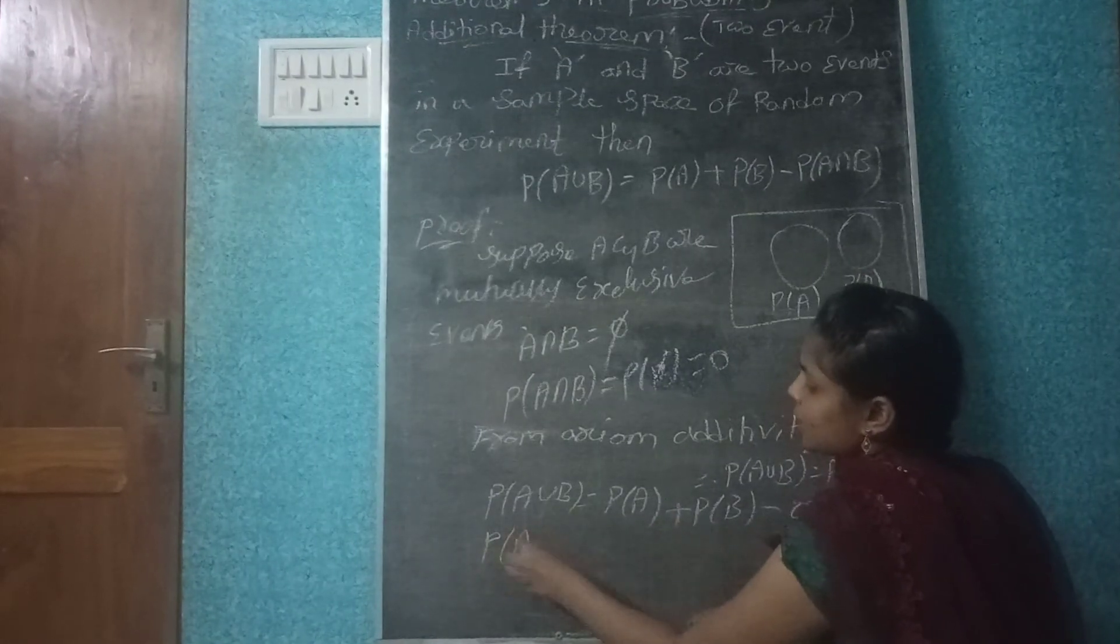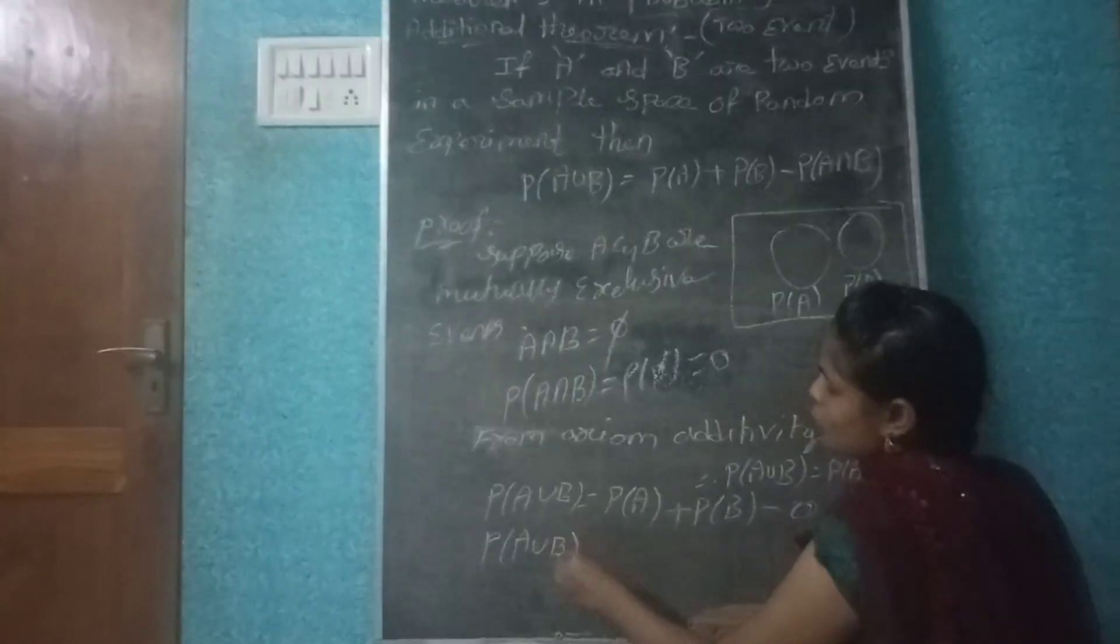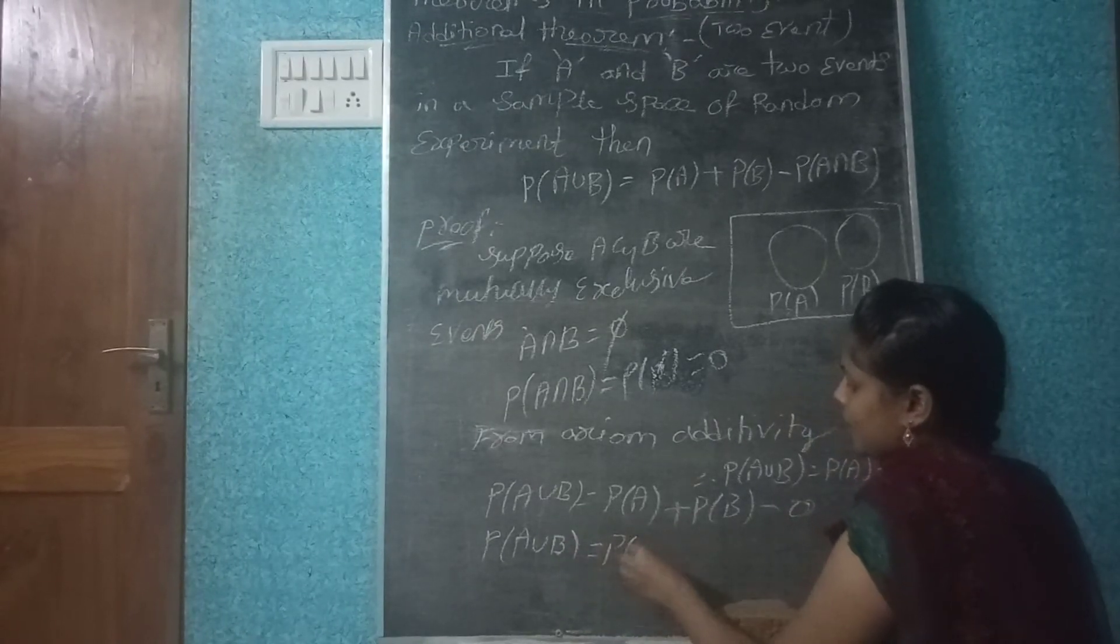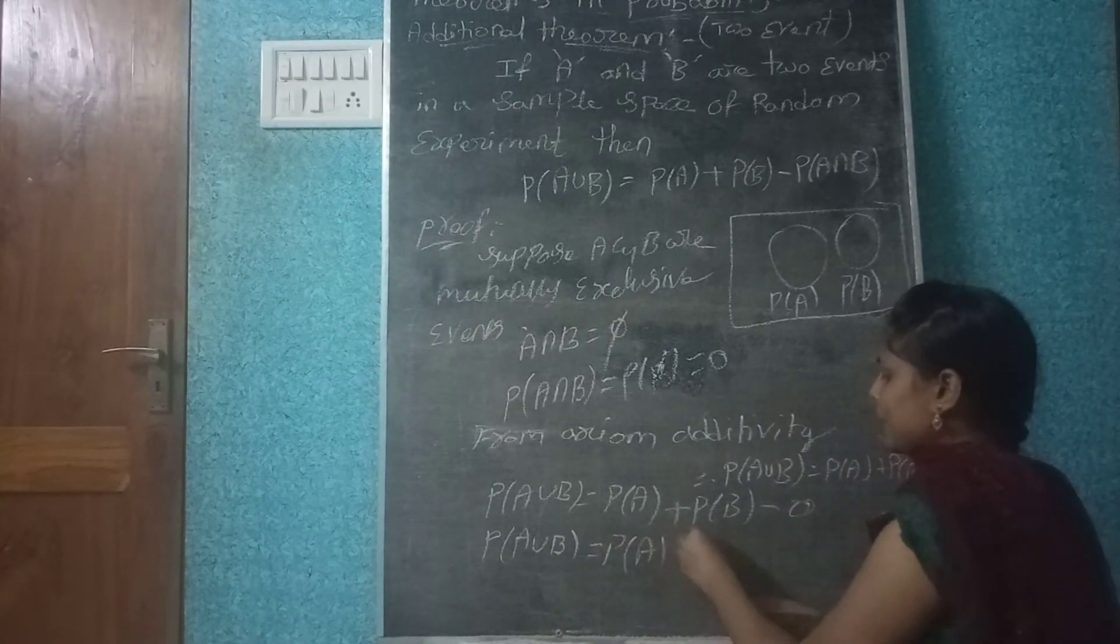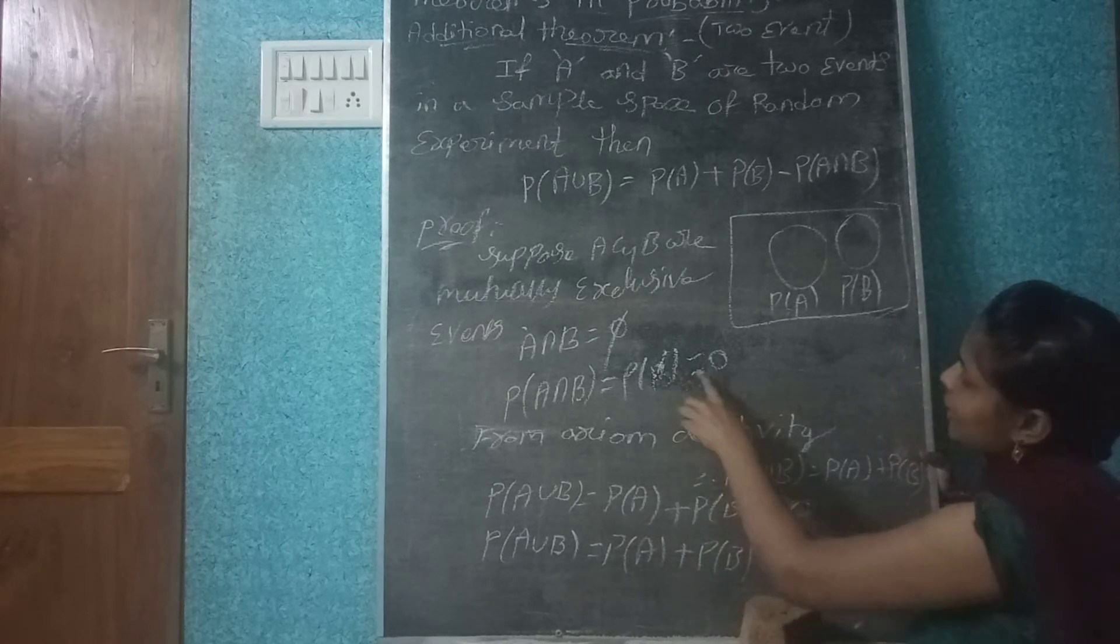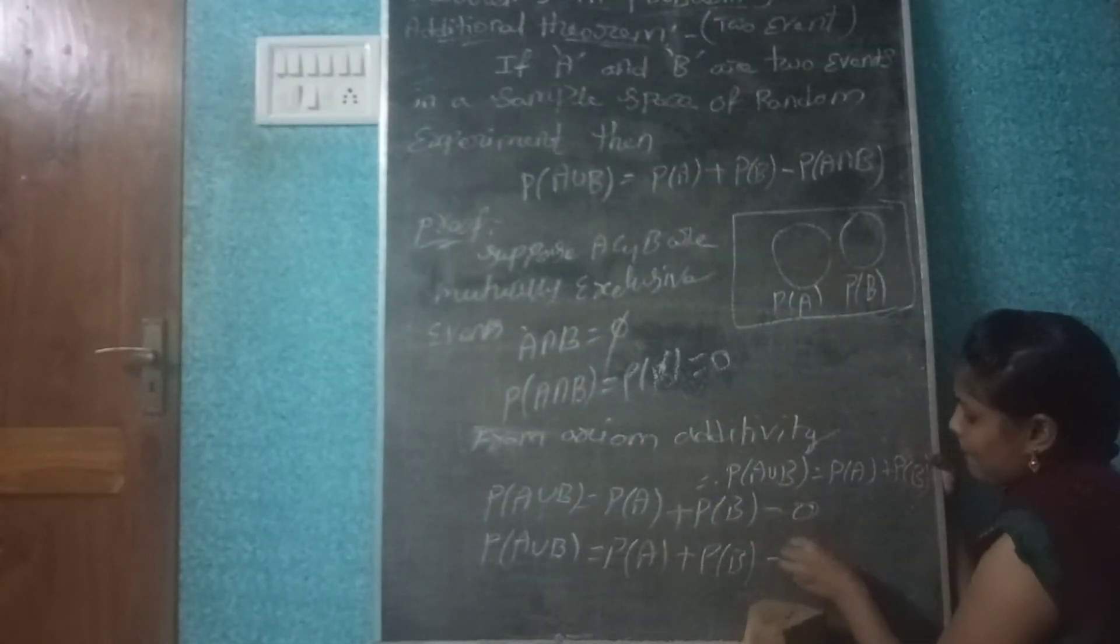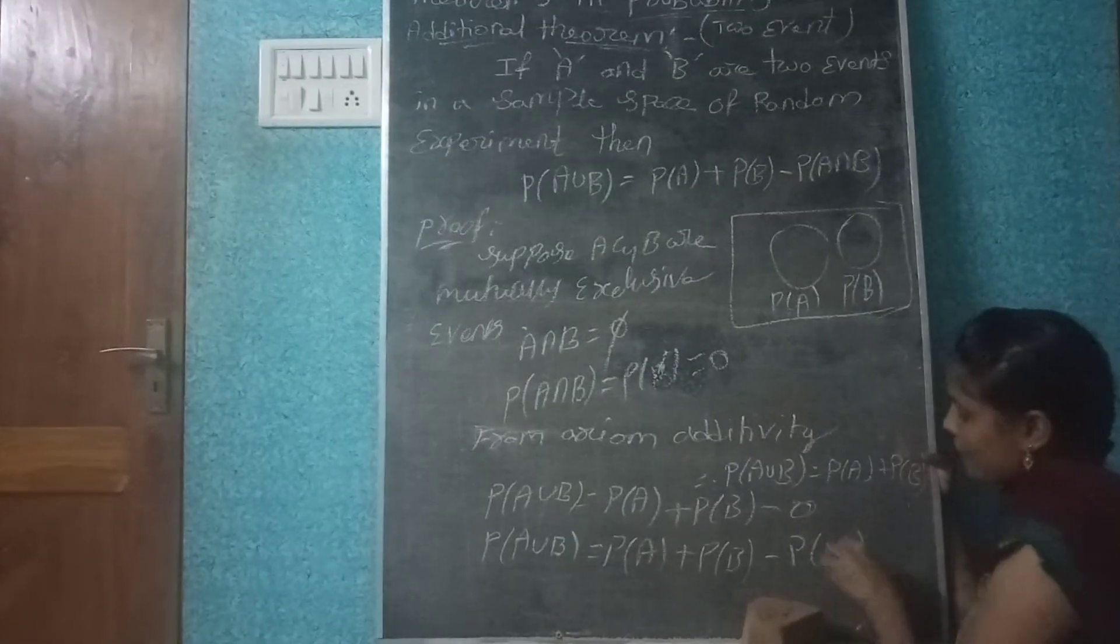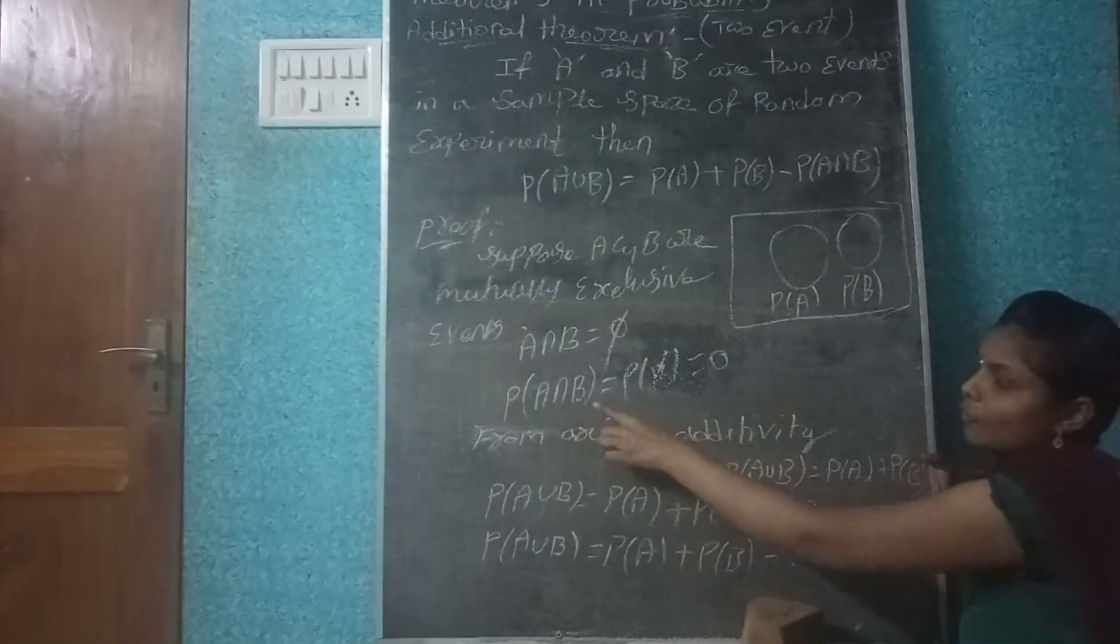P of A plus P of B minus 0, already 0 means the problem is P of A intersection B. So P of A intersection B.